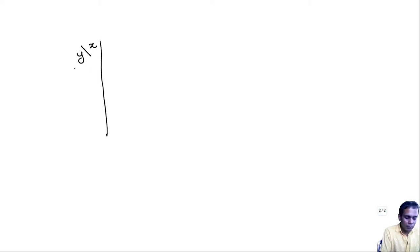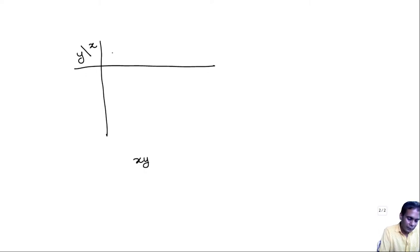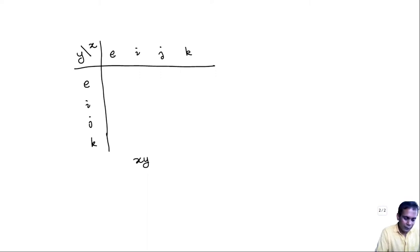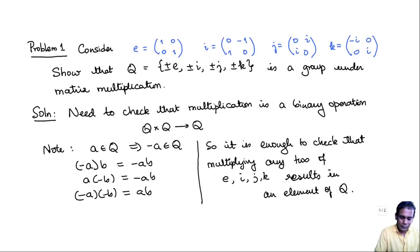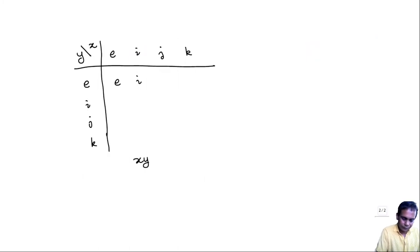Let's just look at these elements and figure out what their products are. We will make a multiplication table of X times Y, where X and Y range over E, I, J, K. E×E = E, I×E = I, J×E = J, K×E = K — since E is just the identity matrix. Similarly, E×I = I, E×J = J, E×K = K.